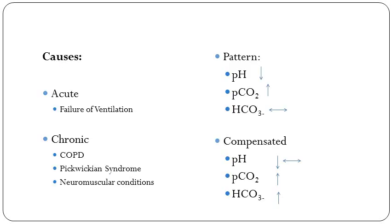Causes of acidosis are basically acute or chronic. Acute tend to be uncompensated; chronic tend to be compensated. The way I like to think of respiratory acidosis is it's essentially failure of ventilation — both acute and chronic are failures of ventilation. For all ABG patterns, this is probably the one you will see the most — respiratory acidosis — and anyone who's spent any time in a respiratory ward will know that all the COPD patients have this.